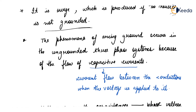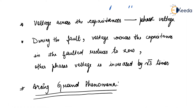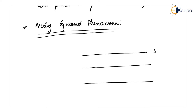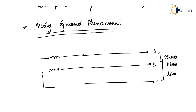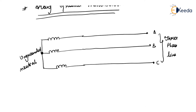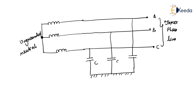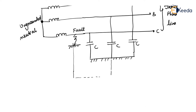Now the phenomenon of arcing ground occurs in the ungrounded three-phase system. So in a three-phase line we have phase A, phase B, and phase C, with the neutral ungrounded. Each phase has a capacitance to earth.